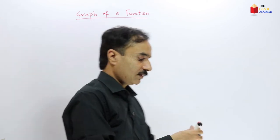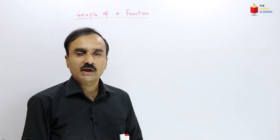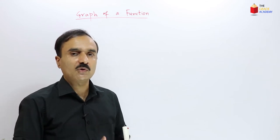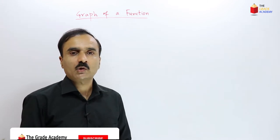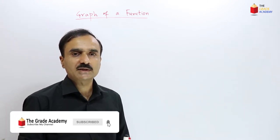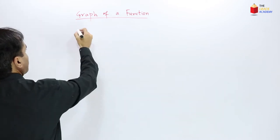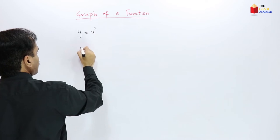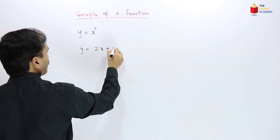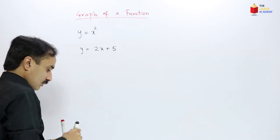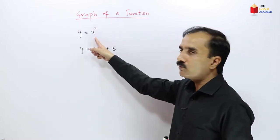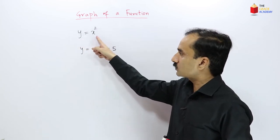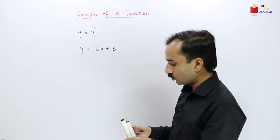As we discussed, a function is basically an equation between two variables x and y, where for every value of x there is only one value of y. For example, consider the equations y = x² and y = 2x + 5. In both these equations, we can see that for any value we give to x, we get only one value of y. So in y = x², y is a function of x — this equation represents a function.